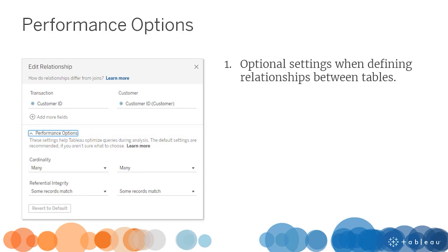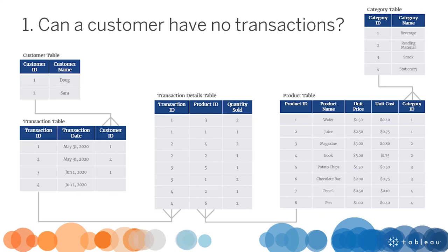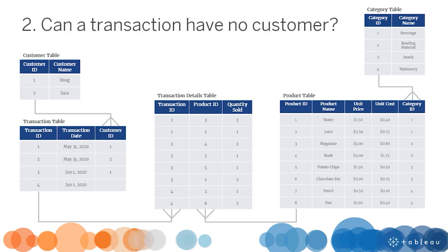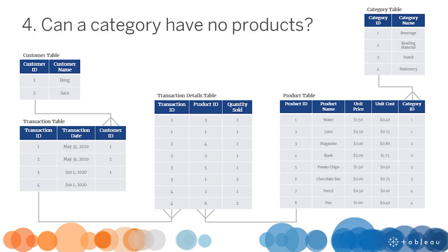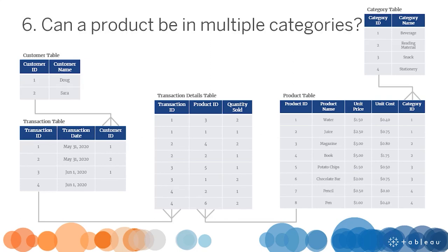Performance options are optional settings we can specify when defining relationships between tables. The default settings ensure that no data goes missing in our visualizations, but we can adjust the settings to improve performance. We define the settings based on our data model diagram and our business rules. Consider: Can a customer have no transactions? Can a transaction have no customer? Can two customers split a transaction? Can a category have no products? Can a product have no category? Can a product be in multiple categories?